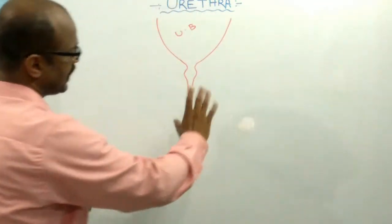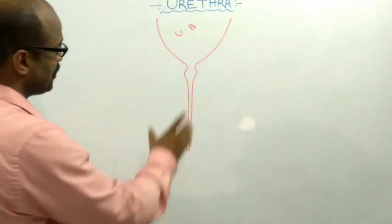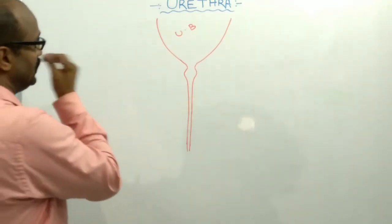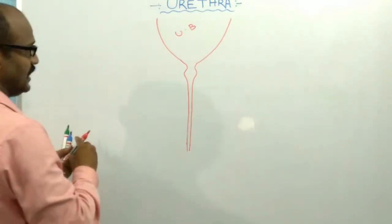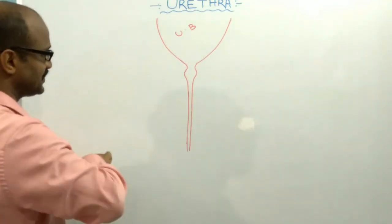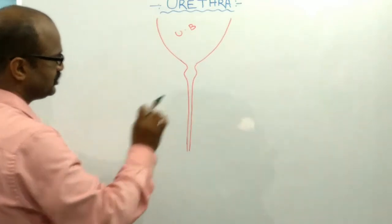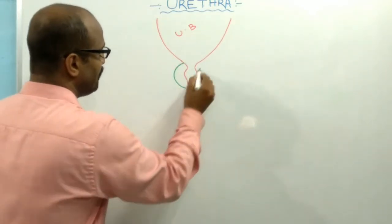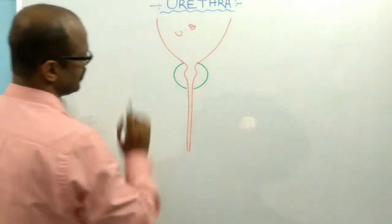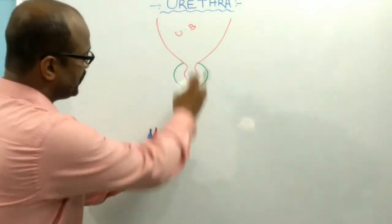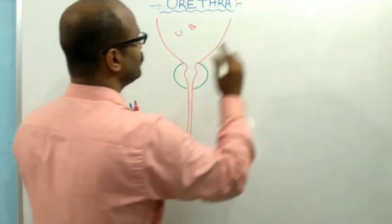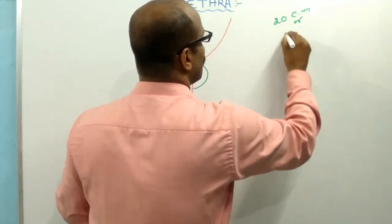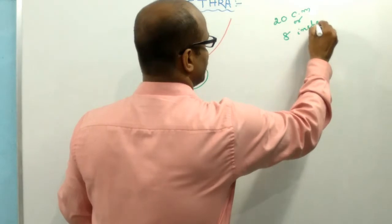The urethra is part of both the reproductive system and the urinary system. On the basis of position, the urethra is divided into three parts. The total length of the urethra is about 20 centimetres or 8 inches.